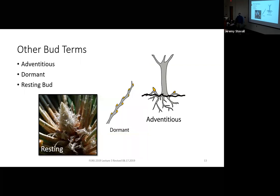Buds we think of as being on the above-ground portion of a tree. If we find those buds on the roots where we don't think they belong, we call them adventitious buds — but you do find that on some species. A dormant bud is what you would see around here in January, February, December, where the bud has set for winter and it's not going to open — that's a really good time to collect twigs. This big white fuzzy longleaf bud is an example of a resting bud, since longleaf pine is a recurrently flushing species that may flush again after resting briefly within the same growing season.